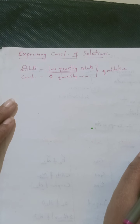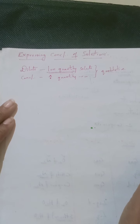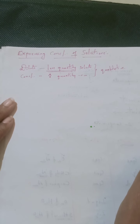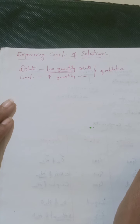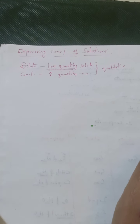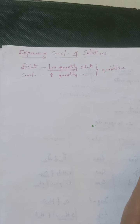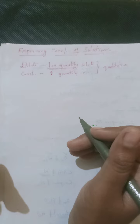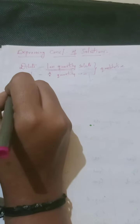But in real life, these kinds of descriptions can create a little bit of confusion. So we need to express this concentration in terms of quantitative analysis. Quantitatively, we can explain the composition of solute present in the solution by using its percentage. In that percentage mode, the first type is the mass percentage method.